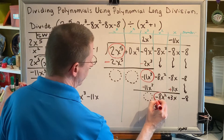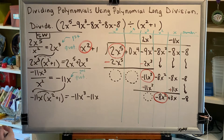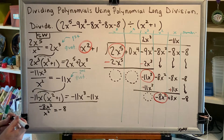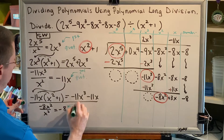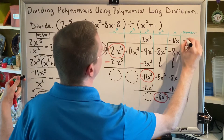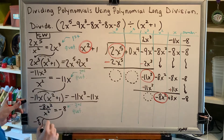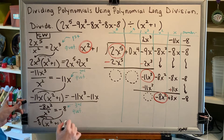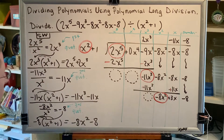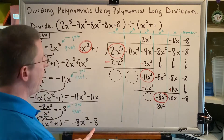One final pass. The first term of the lowest under divided by the first term of the denominator: negative 8x squared divided by x squared gives the result negative 8. This is the third piece of the quotient, and it goes above the division bar in the number column: subtract 8. Next, take this newest piece of our quotient and multiply it by the entire denominator, x squared plus 1. Using the distributive property, we get negative 8x squared minus 8. This goes beneath the lowest under: negative 8x squared in the x squared column, and negative 8 in the number column.